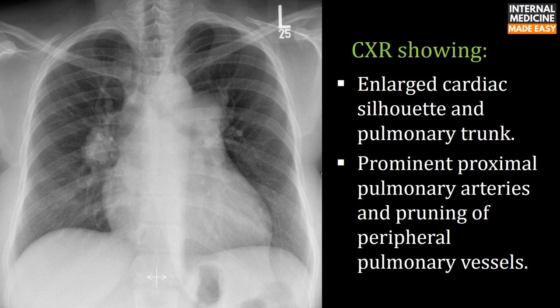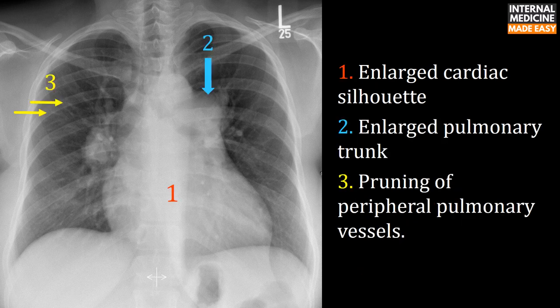This patient has pulmonary hypertension. The chest X-ray shows enlarged cardiac silhouette and pulmonary trunk, prominent proximal pulmonary arteries, and pruning of peripheral pulmonary vessels. The red label (1) shows the enlarged cardiac silhouette, blue (2) shows the enlarged pulmonary trunk, and yellow (3) shows pruning of peripheral pulmonary vessels. There are enlarged right and left main pulmonary arteries with disproportionately small peripheral vessels — known as pruning of pulmonary vessels.